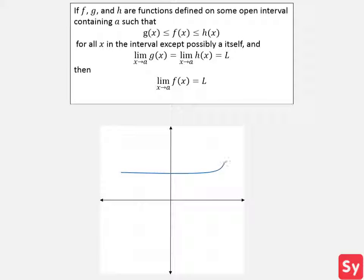Here is our function f. We want to find its limit as x approaches a, so we pick a function that is an upper bound to it. We'll call this function h. We'll also pick a function that is a lower bound to it — we'll call this function g. The squeeze theorem says if the limits of h and g are the same as x approaches a, then the limit of f as x approaches a must equal this limit. It's because f is squeezed or sandwiched between these two functions.